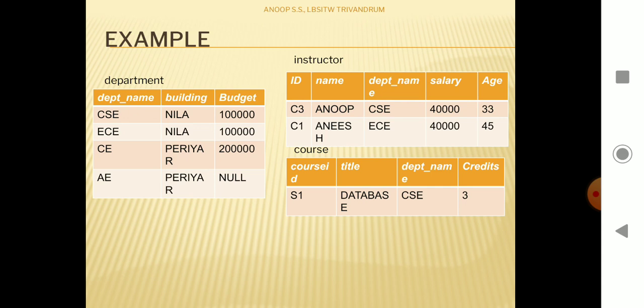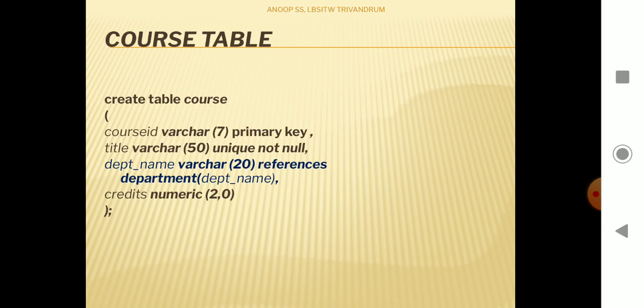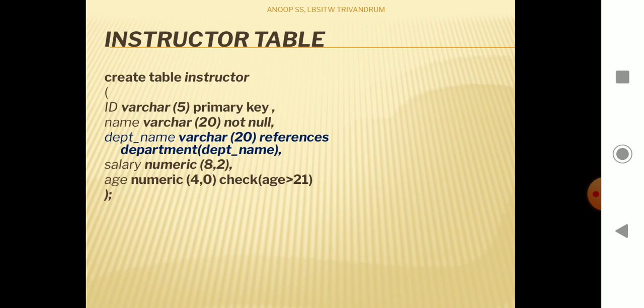For further examples, I am considering three tables: department, instructor, and course. The course table contains four attributes: course ID, title, department name, and credits. Now I'm going to talk about referential integrity constraints and how DELETE queries are affected by them. The course table contains a foreign key department_name referencing the department table, and the instructor table also contains a foreign key department_name.